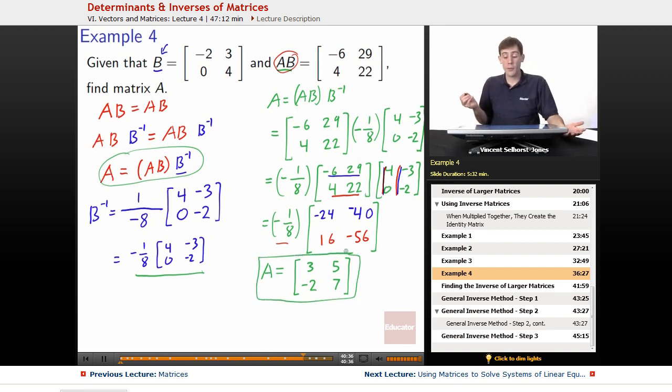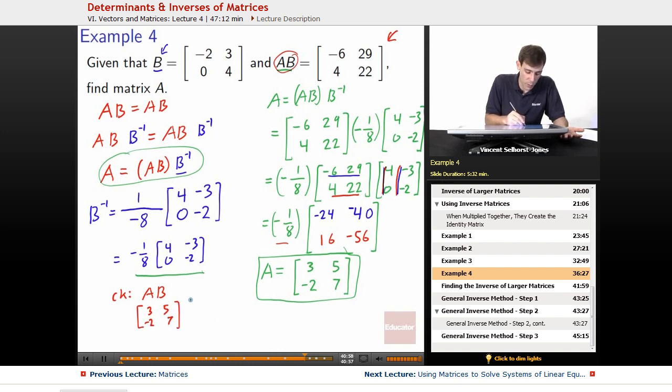We had to do a lot of arithmetic to get to this point, so let's double check and make sure that that is the answer. We know that A times B has to be this guy right here because we were given AB right from the beginning. So, let's take a look. What would A times B be? Well, we know what the A we just figured out is. That's [3, 5; -2, 7], and the B we started off with that we were given is [-2, 3; 0, 4]. So,